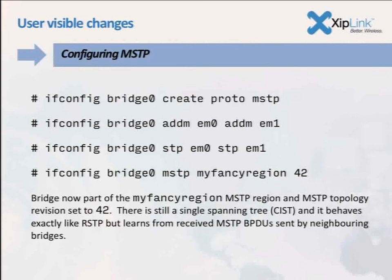It's a fairly lightweight protocol. The only thing multiple spanning tree does is create an extra layer of indirection — so instead of calculating one tree on your bridge, you're going to calculate up to 63 trees, and it's still just a couple of pointers. The weight of your infrastructure will definitely take you down before the protocol does.